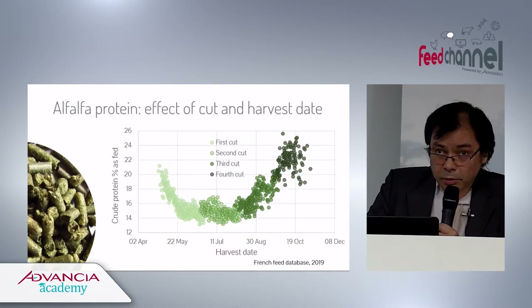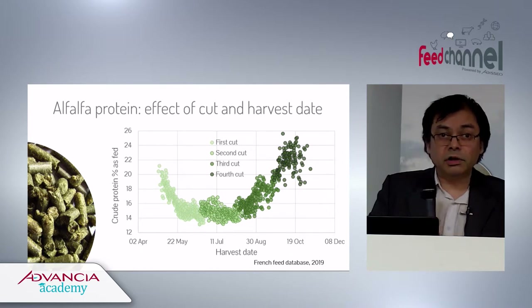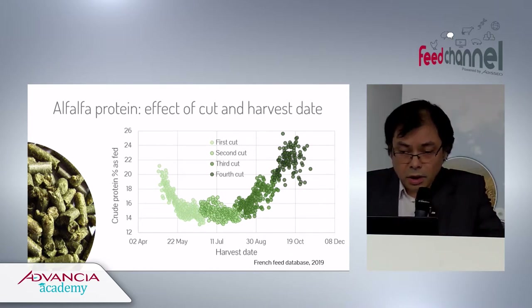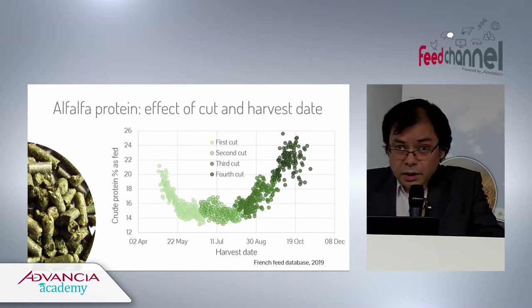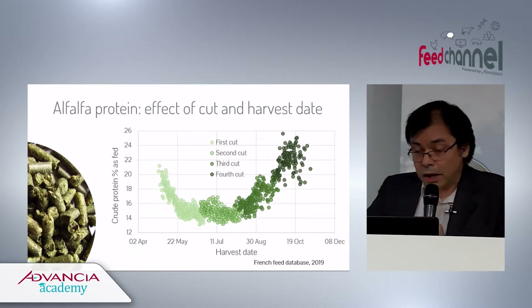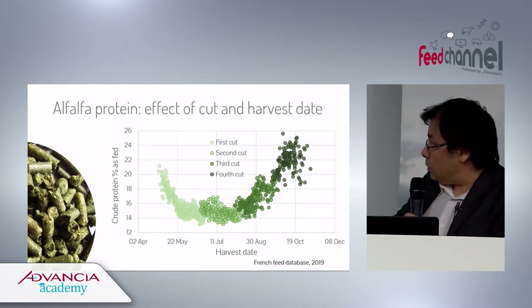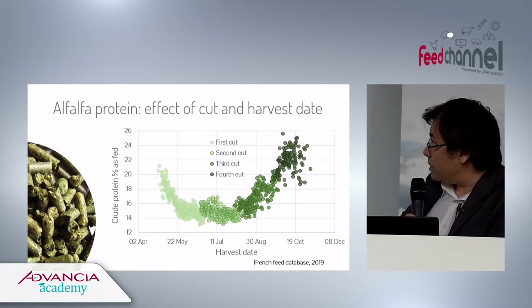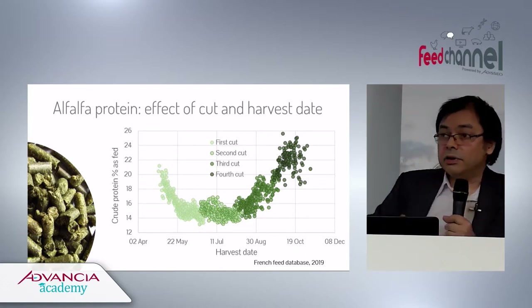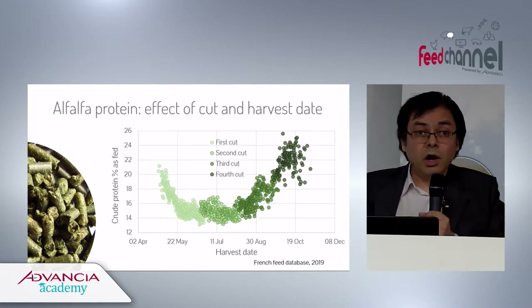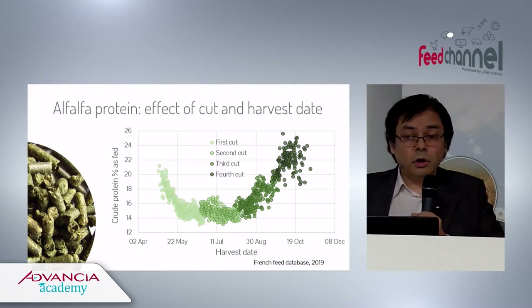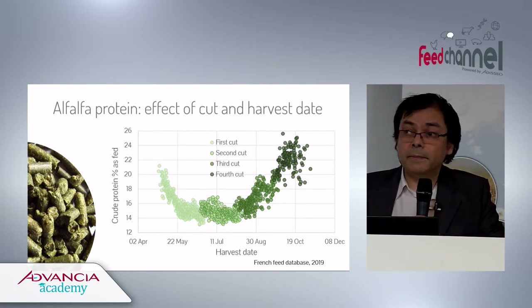Another example of the effect of cultivation processes is about alfalfa protein. A graph of harvest date and cut shows how complex it is: the first, second, third, and fourth cuts each have different patterns of influence on crude protein.